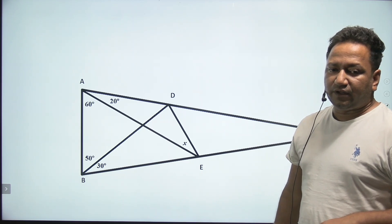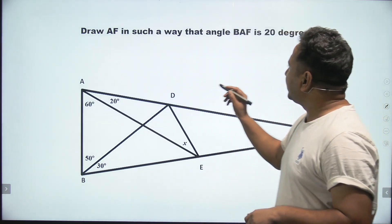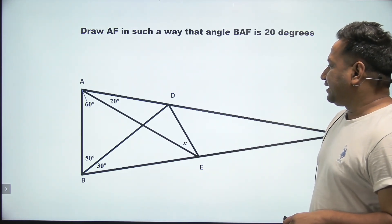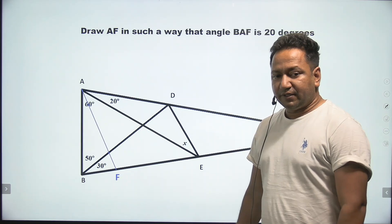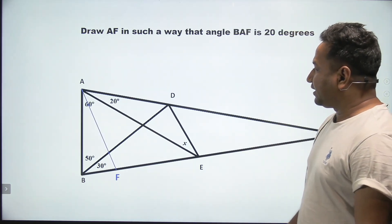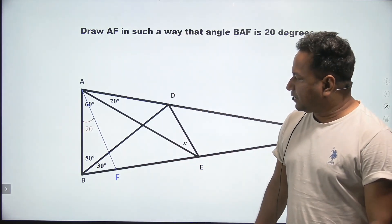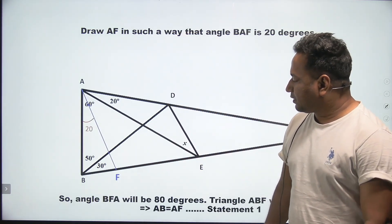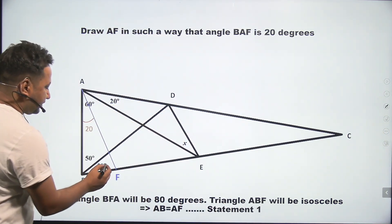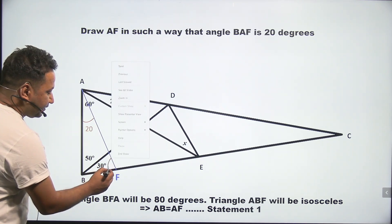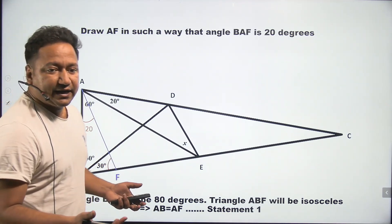So first of all, we'll draw AF in such a way that angle BAF is 20 degrees. So look at this, this is F, and as mentioned over here, angle BAF would be 20 degrees. Similarly, we can say angle BFA, this thing will be 80 degrees. The reason is very simple, because the sum of the angles of a triangle has to be 180.